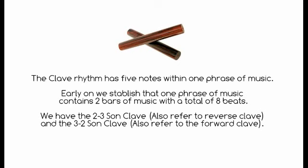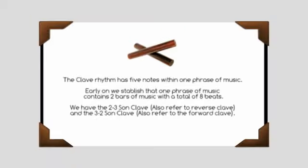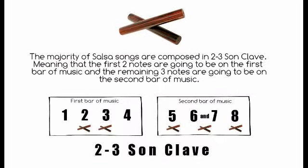The clave rhythm has five notes within one phrase of music. We established that one phrase of music contains two bars of music with a total of eight beats. So we have the 2-3 son clave, also referred to as the reverse clave, and the 3-2 son clave, also referred to as the forward clave. The majority of Salsa songs are composed in 2-3 son clave, meaning the first two notes are on the first bar of music and the remaining three notes are on the second bar of music.